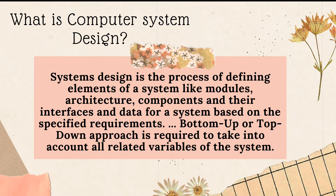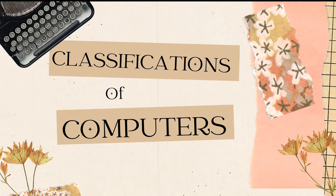What is Computer System Design? System Design is the process of defining elements of a system like modules, architecture, components, and their interfaces and data for a system based on the specified system requirements. A bottom-up or top-down approach is required to take into account all related variables of the system.